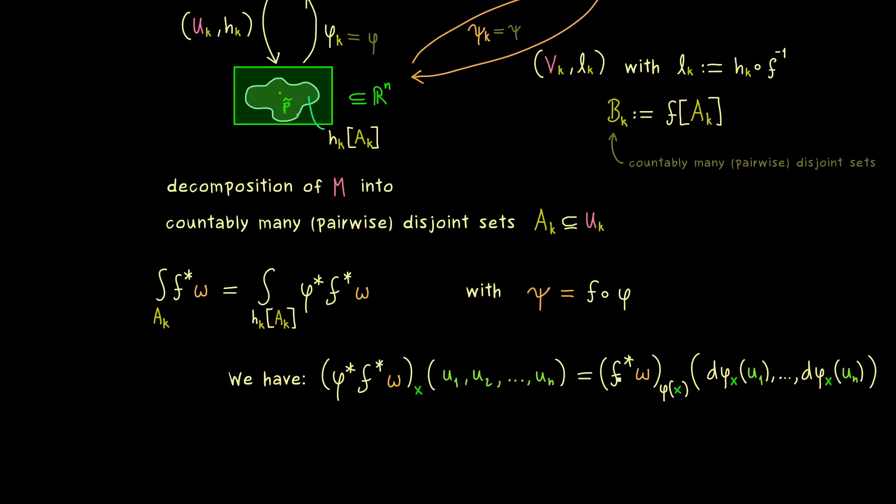And then the next step would be to push it further to the original volume form on the manifold N, and this one we have already written down before. We just have to apply the differential of f, and moreover the point of evaluation is f of phi of x. And there you should already see, this is exactly psi of x.